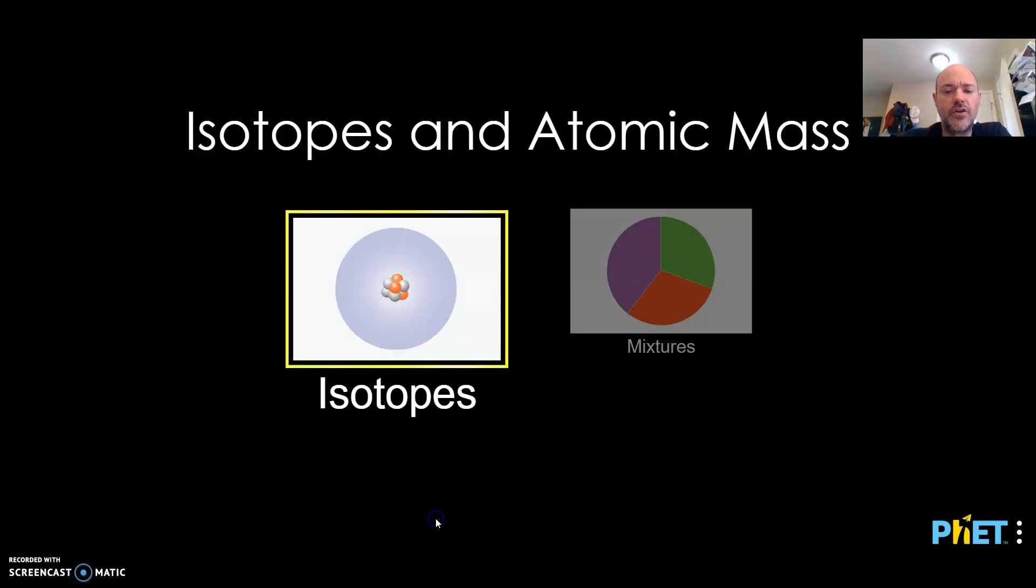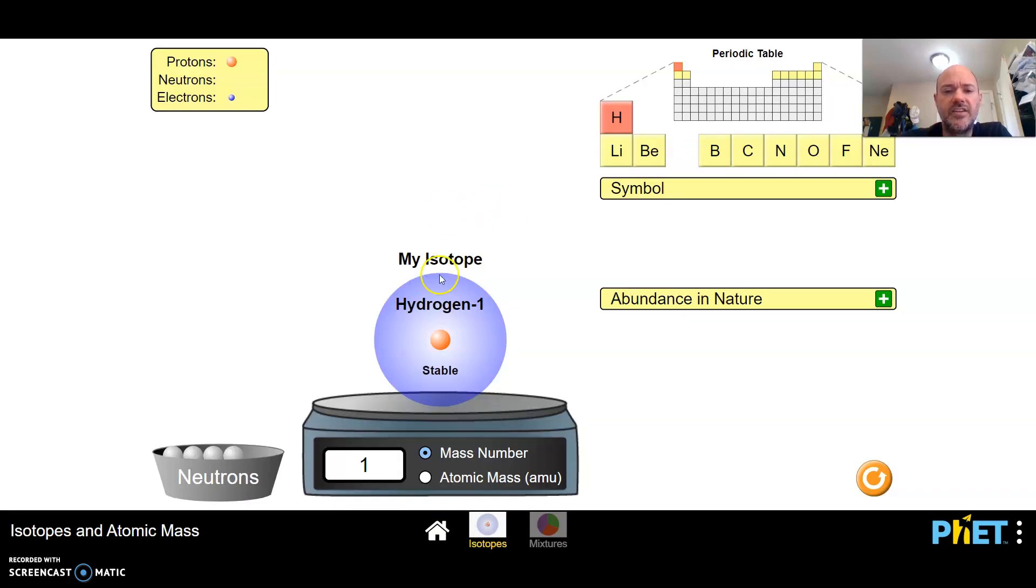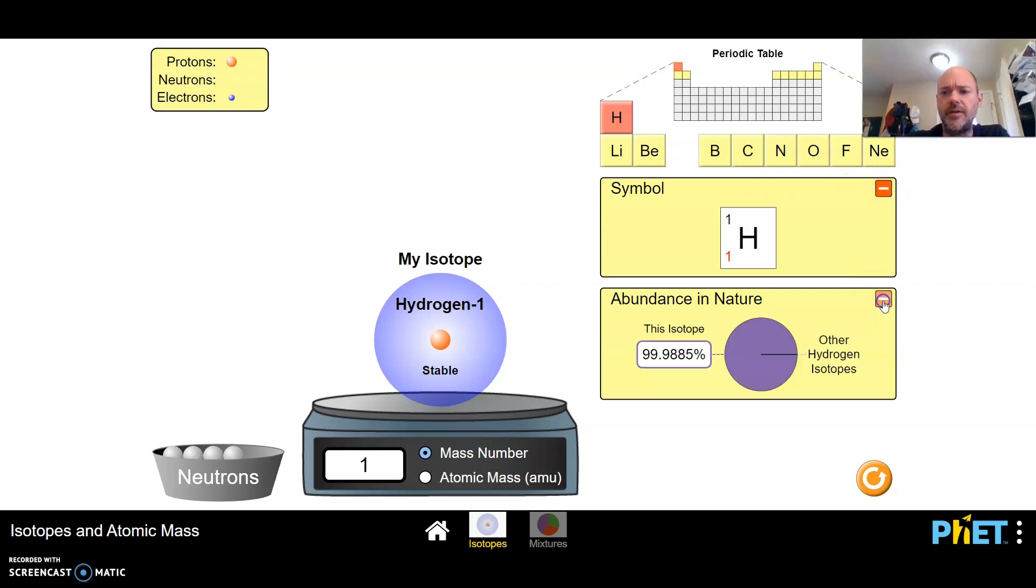So if we start off at this home page and you click on the isotopes, you can see you can go through the first ten elements. I recommend anytime you do a simulation like this you open up the different things.